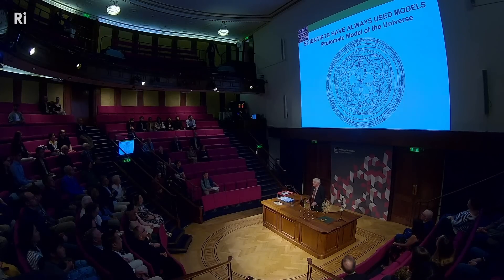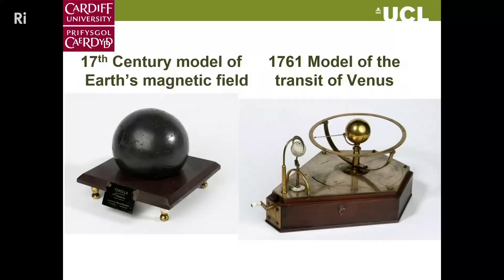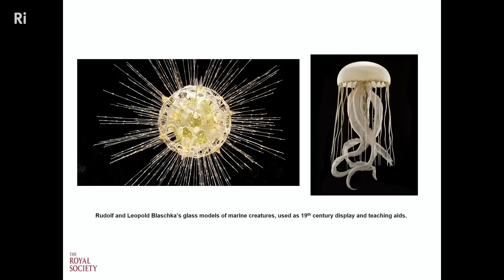But it was a model, and it was a useful model. In the Royal Society's collection you'll see a model of the transit of Venus — a very important astronomical observation made in the 18th century — and a very early model helping to understand terrestrial magnetism. Here are some other beautiful models used mainly as teaching aids: models of marine creatures, again from the last century.